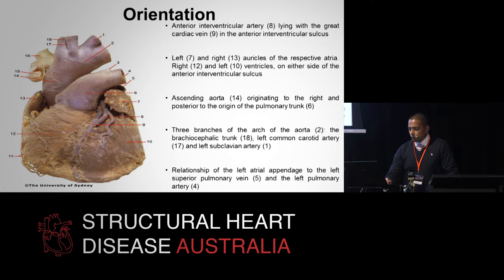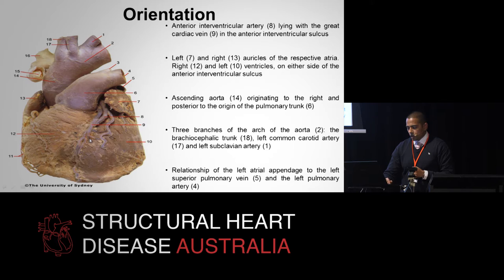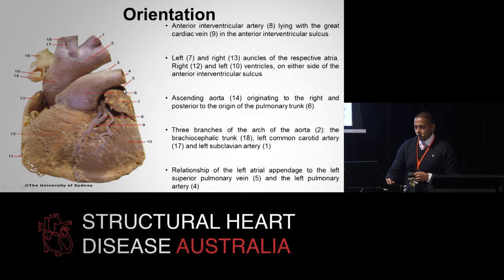An important point is to realise that the ascending aorta originates to the right and posterior to the pulmonary trunk. We'll also talk more about the relationship of the left atrial appendage to the left superior pulmonary vein and the left pulmonary artery.